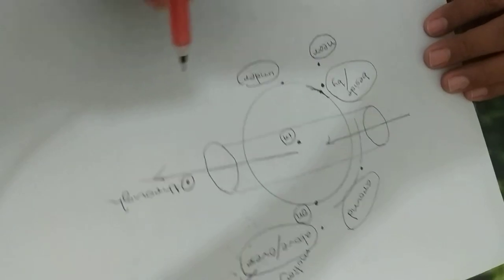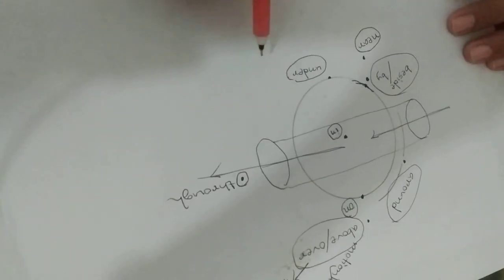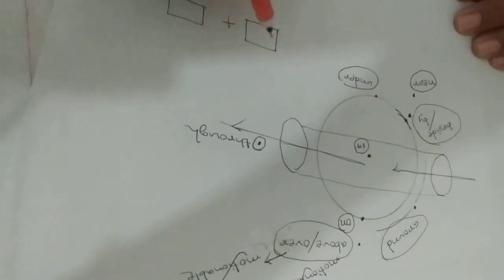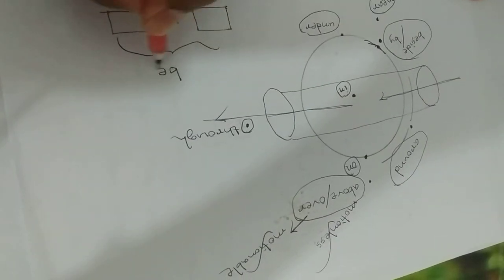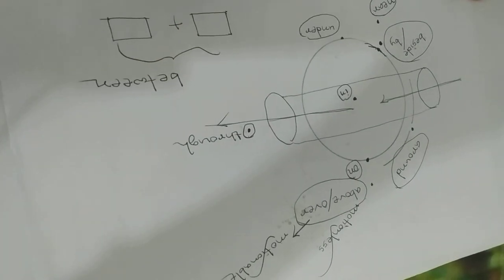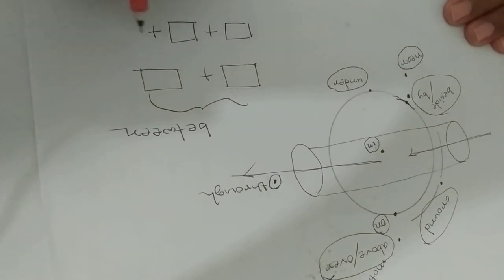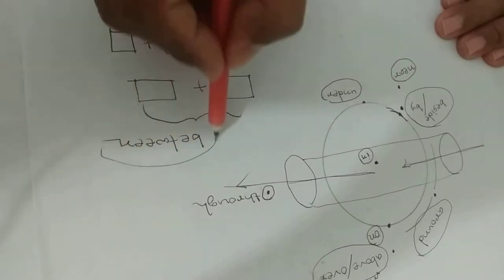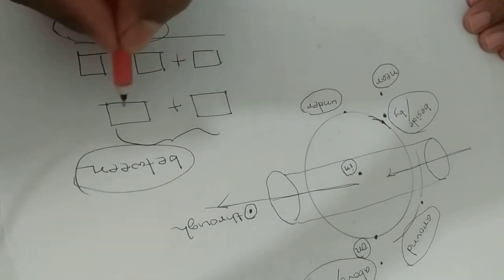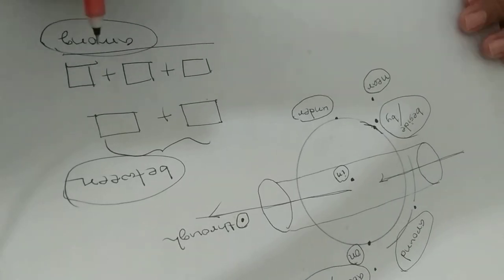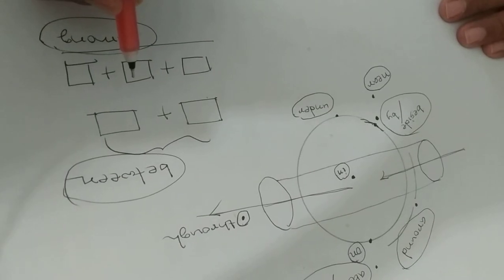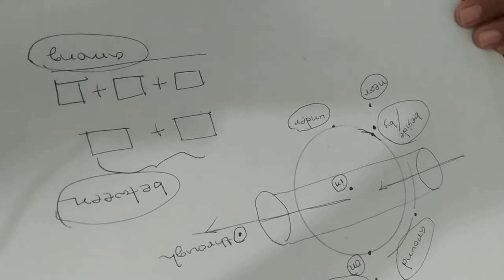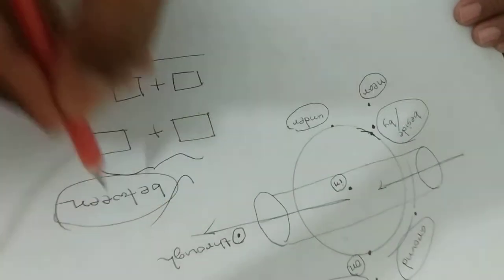Dear students, আমরা অনেকগুলো preposition-এর নিয়ম শিখলাম। এবার আরও একটি preposition দেখাচ্ছি। দুয়ের মধ্যে বোঝাতে 'between' হবে। আর যদি দুই-এর বেশি অনেকের মধ্যে বোঝায় (more than two), সেক্ষেত্রে হবে 'among'. A-M-O-N-G. Between একটি preposition, among আরেকটি preposition। দুয়ের মধ্যে বোঝাতে between, দুয়ের অধিক ব্যক্তি বস্তির মধ্যে বোঝাতে among বসে।